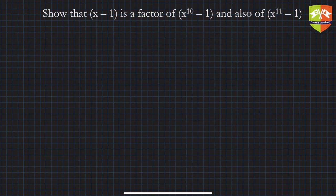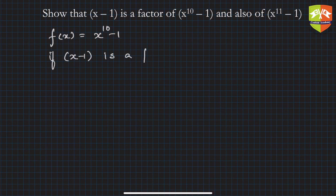Show that (x - 1) is a factor of (x^10 - 1). So let's say f(x) equals x^10 - 1. And if (x - 1) is a factor of f(x), then clearly what will happen?